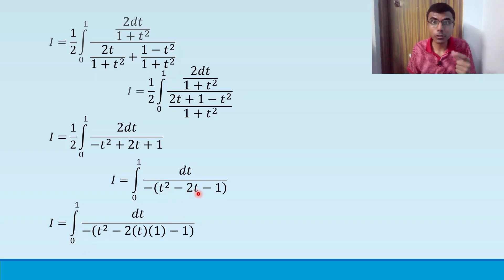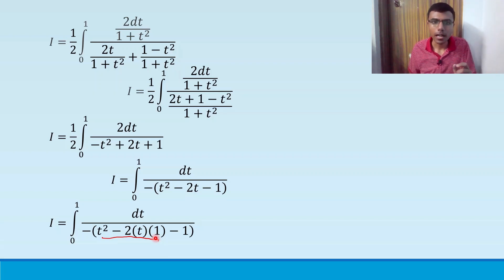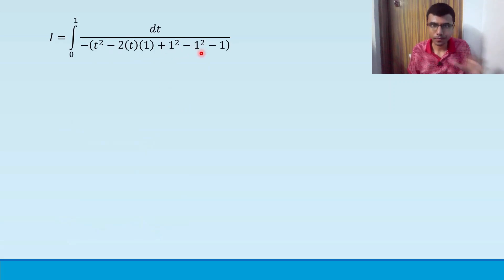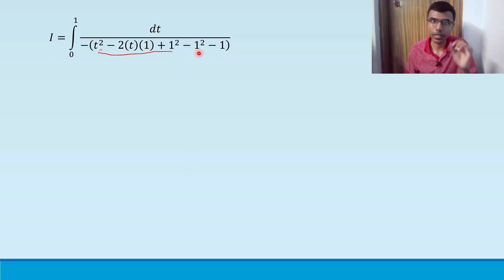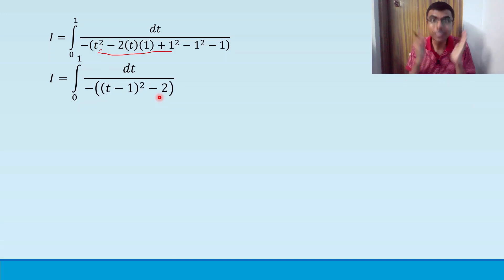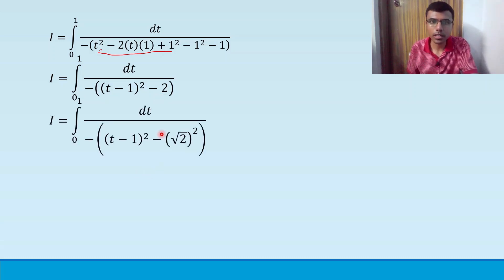I can write the denominator as t² - 2·t·1, which looks like a² - 2ab with b = 1, so I complete the square by adding and subtracting 1². This gives (t - 1)² - 1. So the denominator inside the minus becomes t² - 2t - 1 = (t - 1)² - 2. Since minus 1 square is minus 1, and minus 1 minus 1 = minus 2, I have: I = integral from 0 to 1 of dt / [minus of ((t-1)² - 2)]. I write 2 as (√2)².